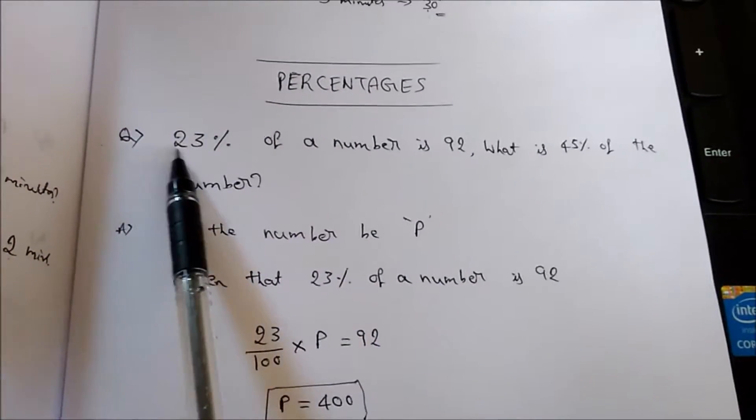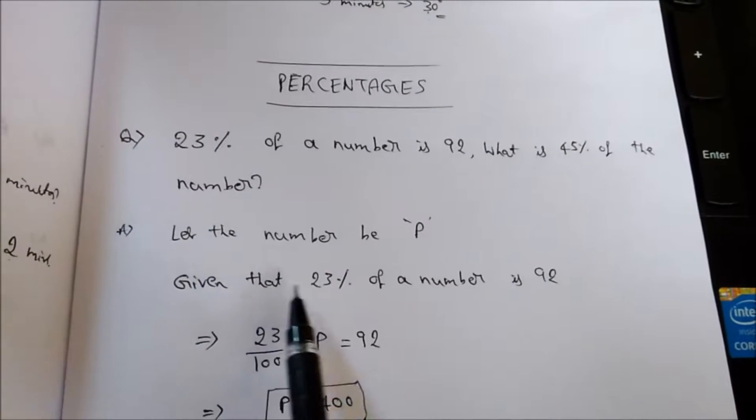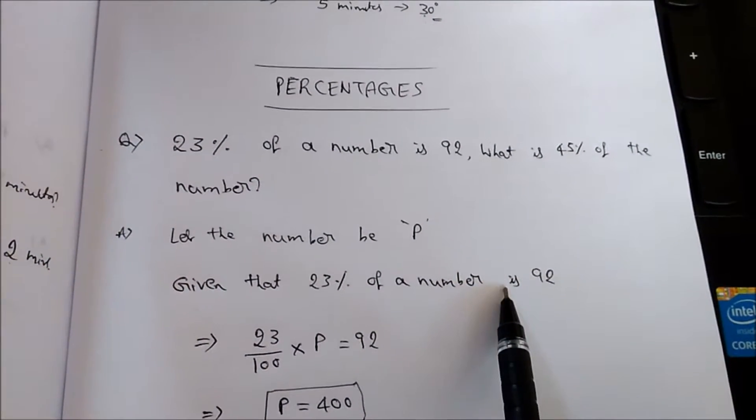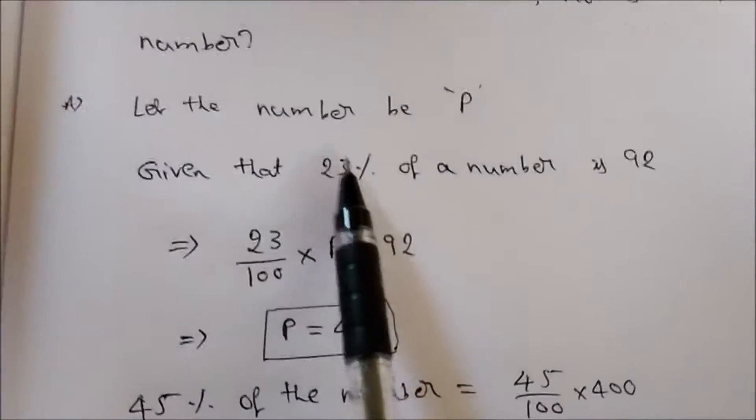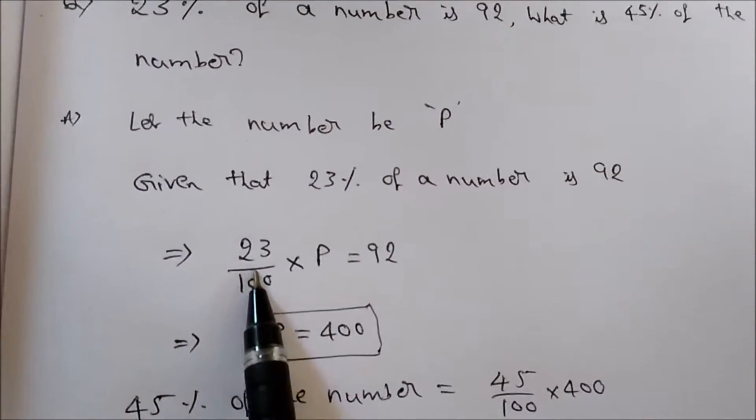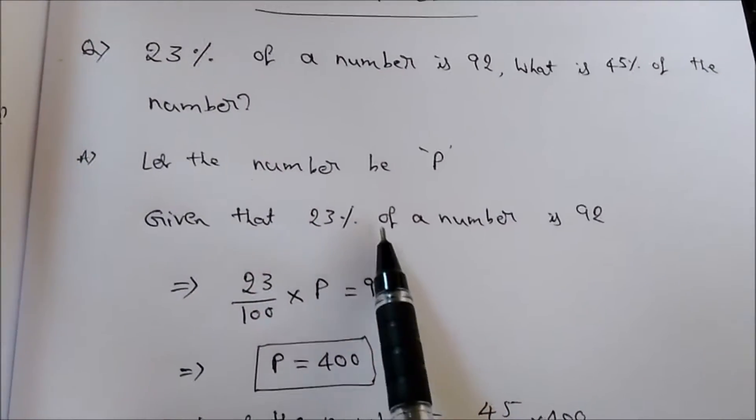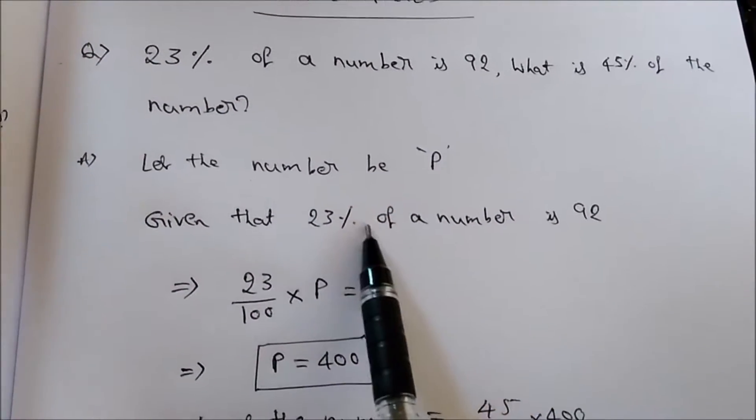Now consider the first statement. It is given that 23% of a number is 92. Now write this in equation form. 23% means 23 by 100. Of a number means of means multiplication.